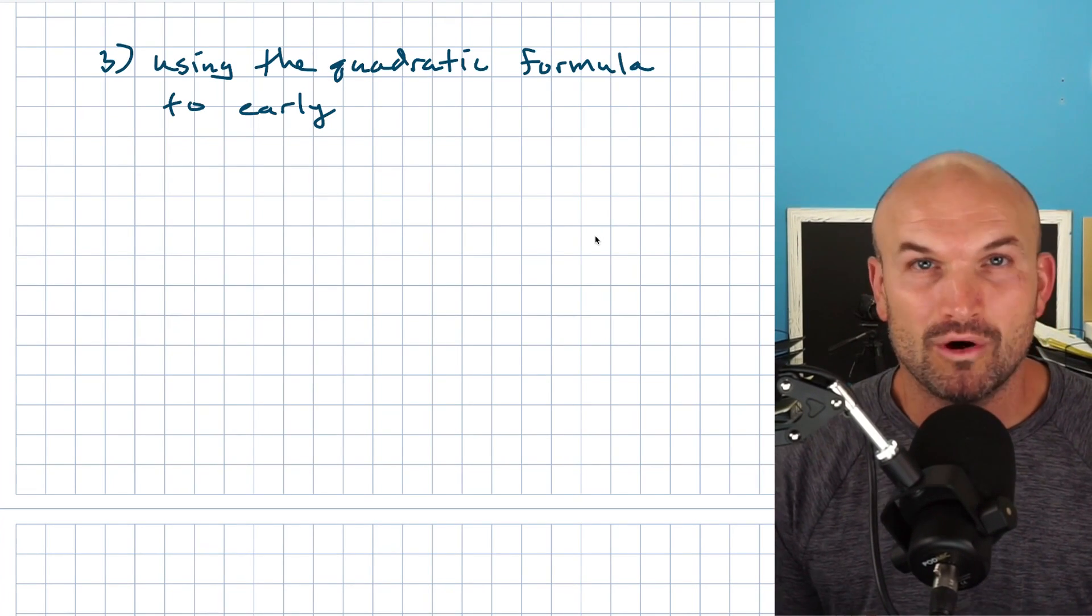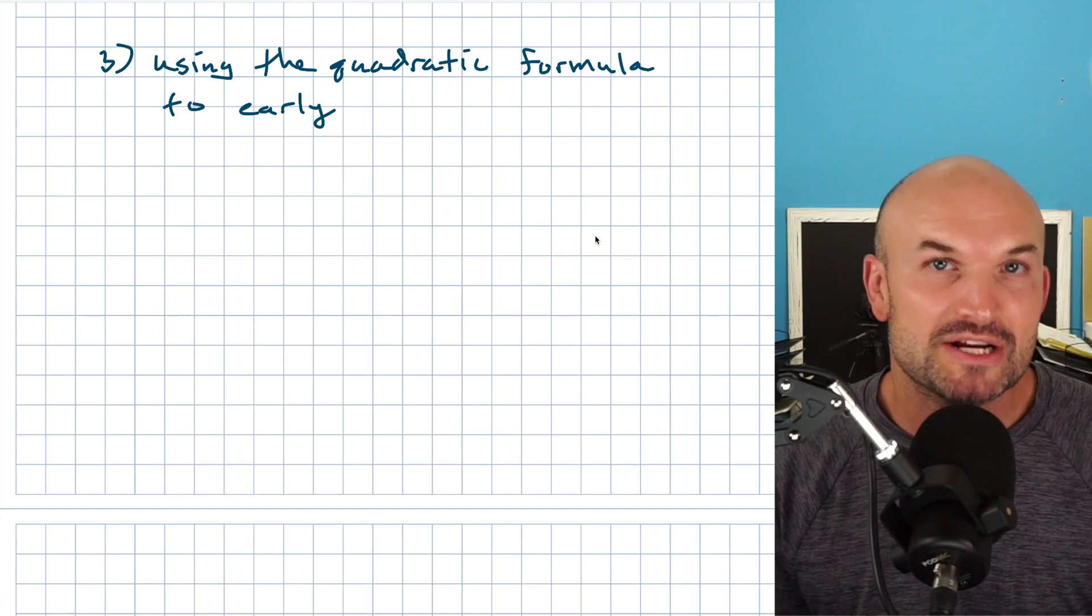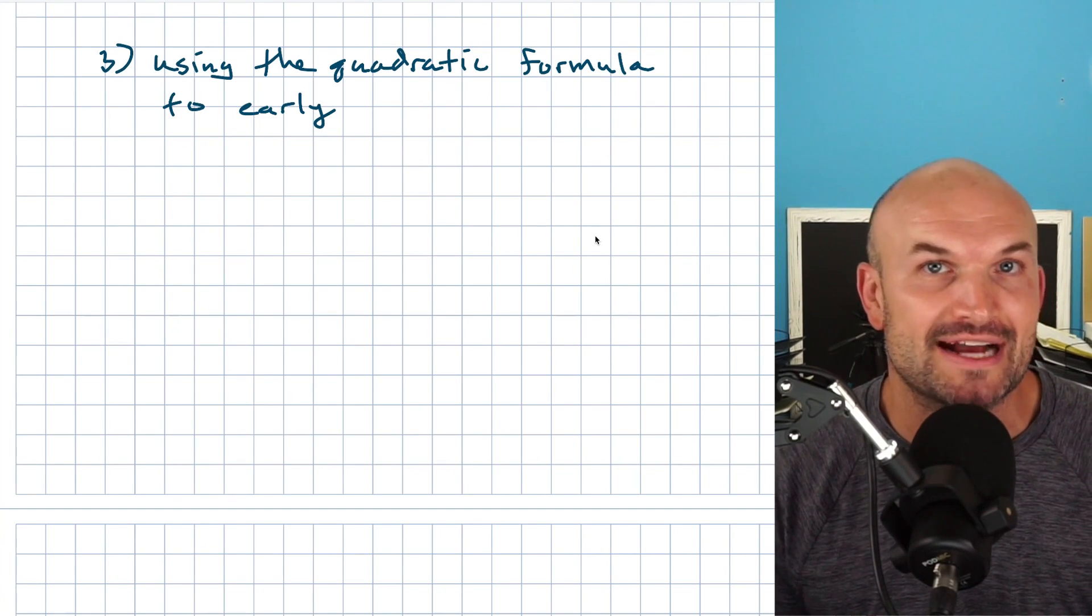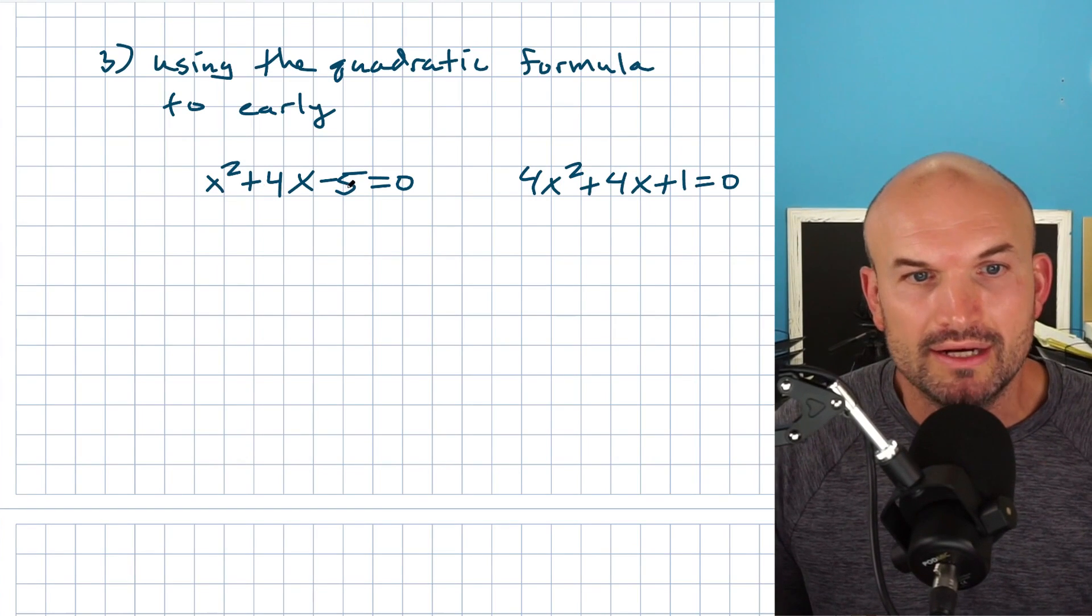But when a is not equal to one, or when you have square numbers, look to your special factoring techniques to help you go ahead and factor quickly. So in this example, you can see my a is equal to one, right?